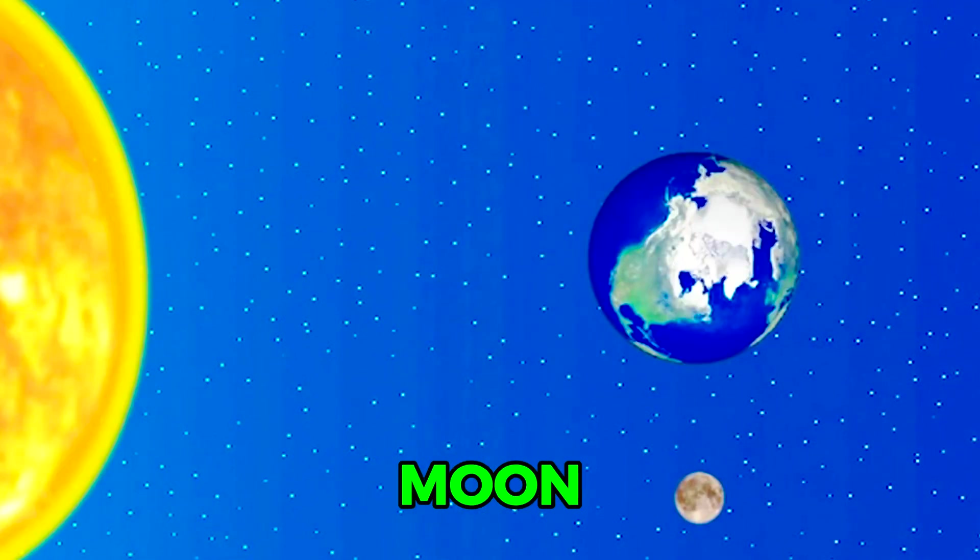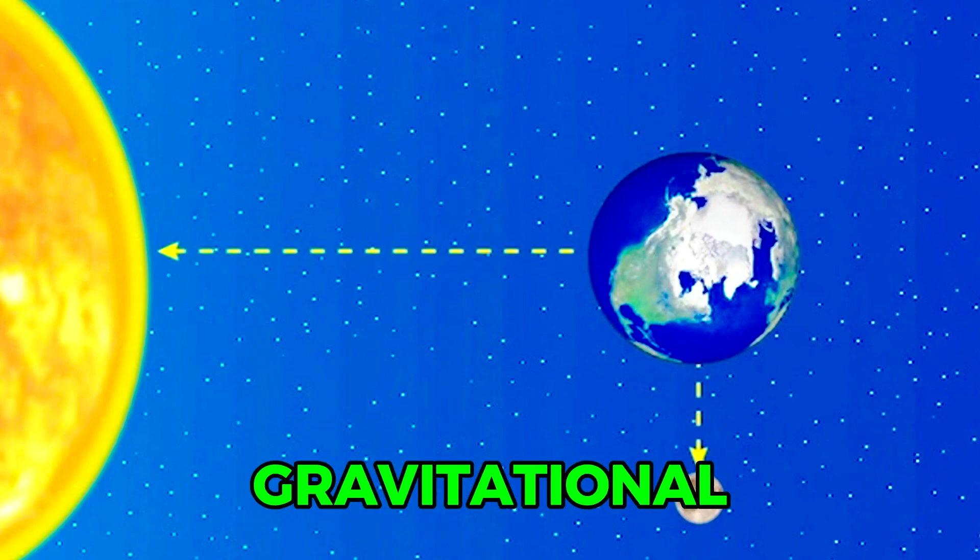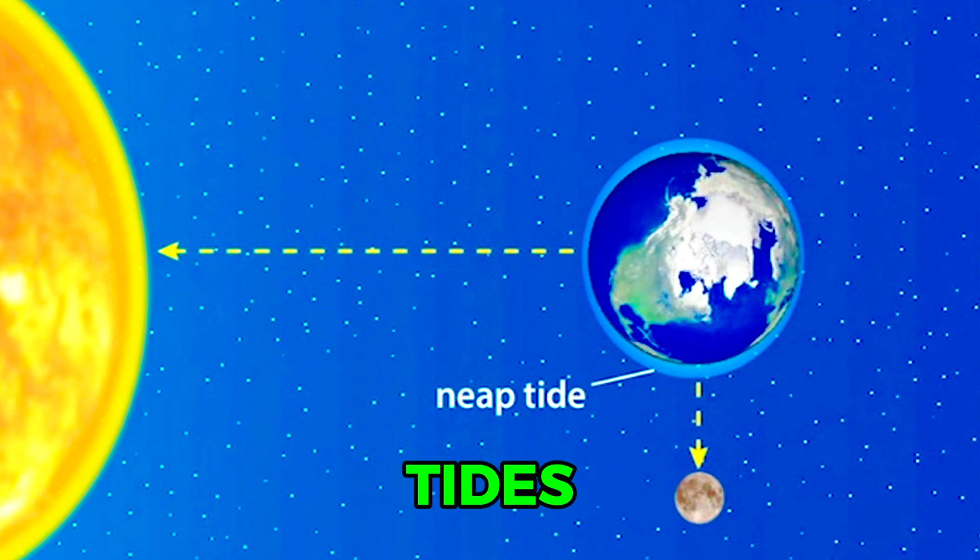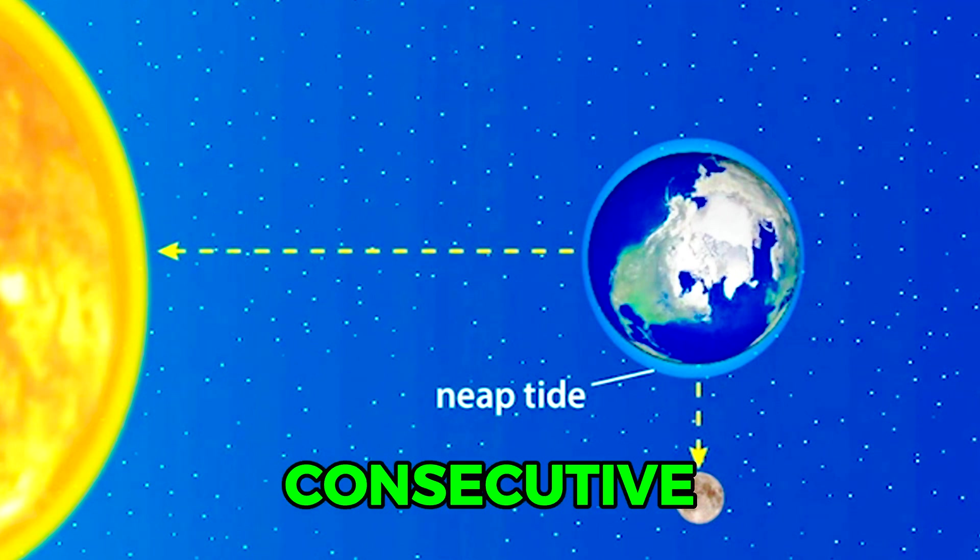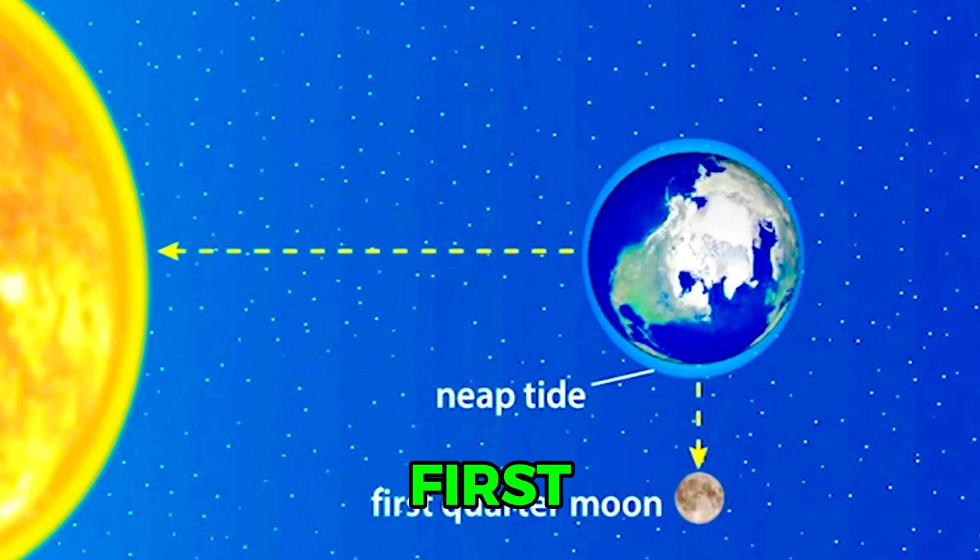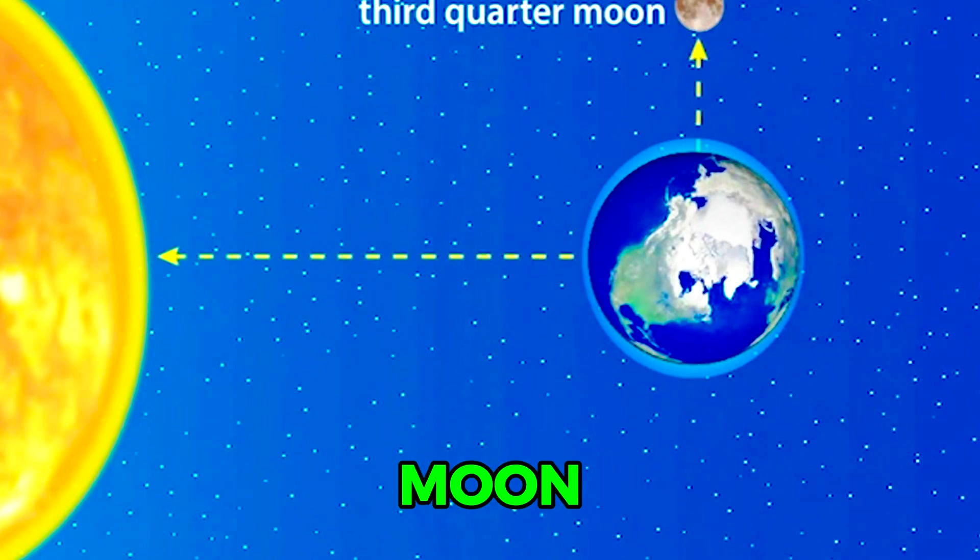When the Sun and Moon are at 90 degrees to one another, the total gravitational pull on the oceans is at its minimum, and the high tide is called a neap tide. These tides have the least difference between consecutive high and low tides. Neap tides occur twice a month during the first and third quarter Moon phases.